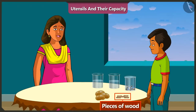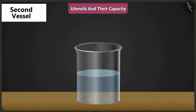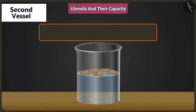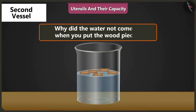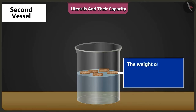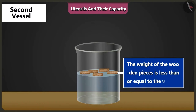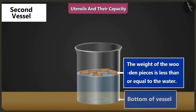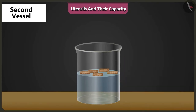Now put these pieces of wood in another vessel half filled with water. Hey, what is this? Why did the water not come up when we dropped in the wooden pieces? Because the weight of these pieces of wood is less than or equal to the weight of water in the vessel. So, these pieces did not sink to the bottom of the vessel. This is why the water did not come up.